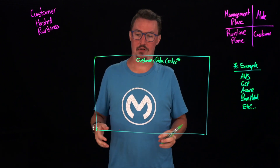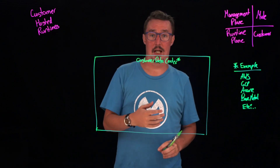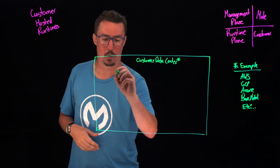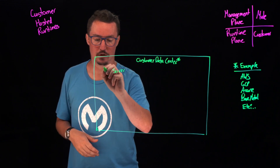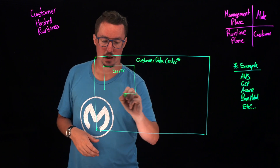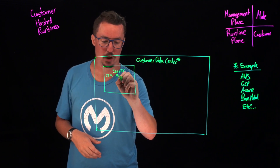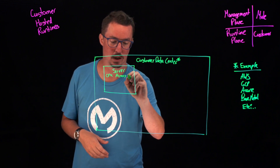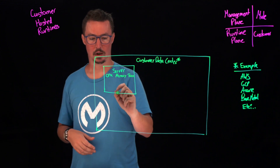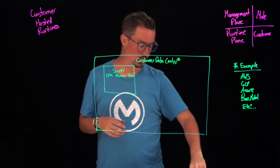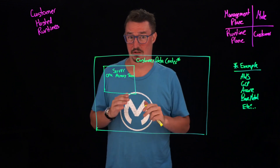When you deploy to a data center, what you need to do is deploy a server. When you have a server, you're going to have a few different things associated with it: CPU, memory, and storage. One thing to note is that all of these resources are going to be shared with everything deployed on that server.